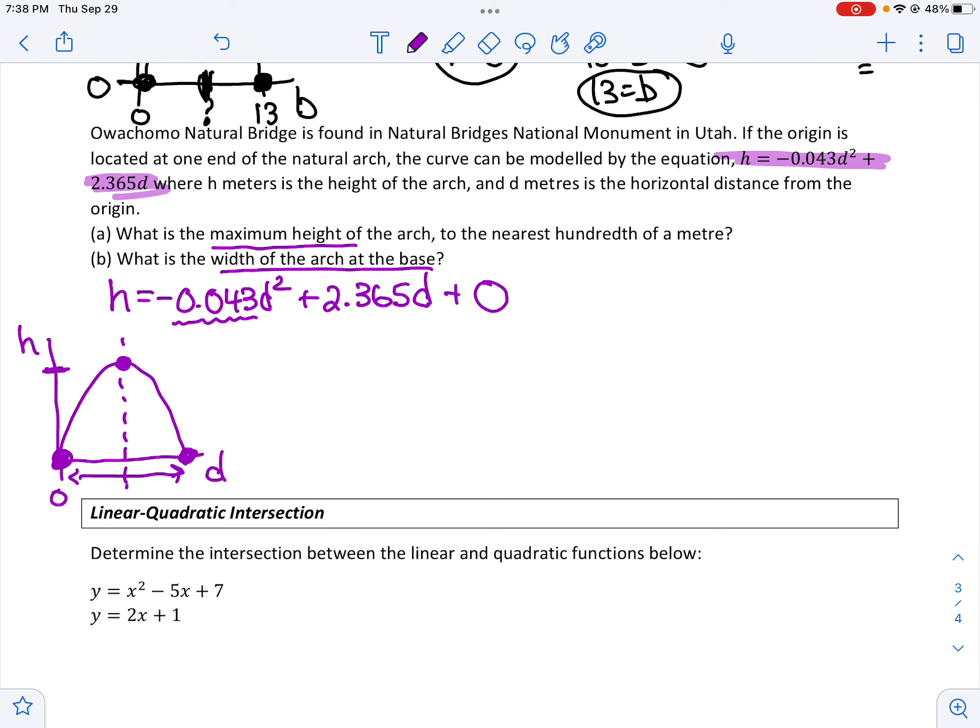Okay, so this is height and this is distance. So when I'm trying to find the roots, I set h equal to zero. And then I'm going to factor out a 0.043d. Oh, I really need a calculator right now. Okay, so what do I have left for my first term? I'll just have a d. Minus, because I factored out a negative. I'll get 2.365 divided by 0.043, which is 55. Okay, so I just common factored out a negative 0.043d, which means I just divided each of these terms by that. And that's what I got.